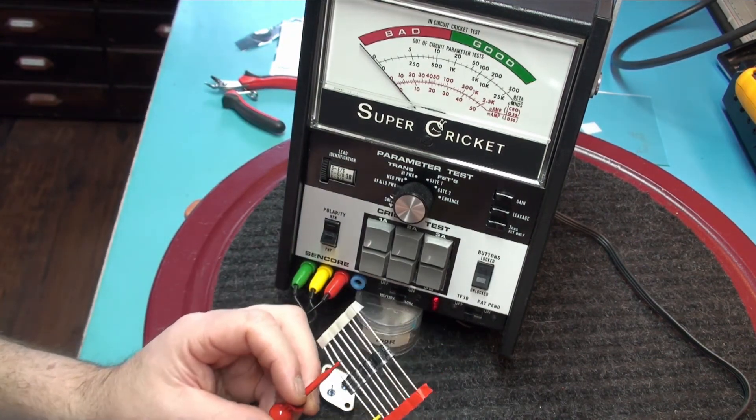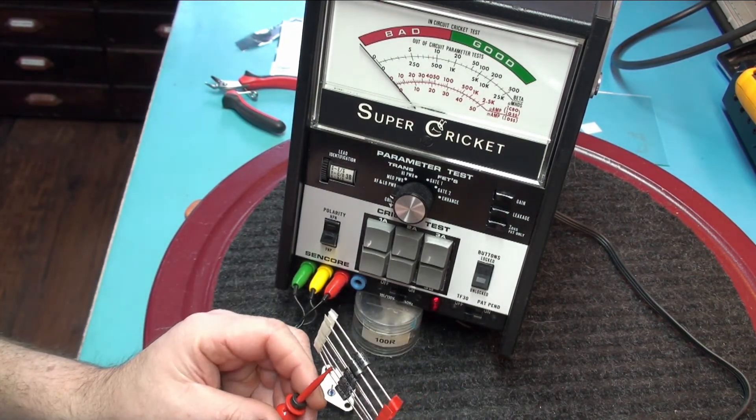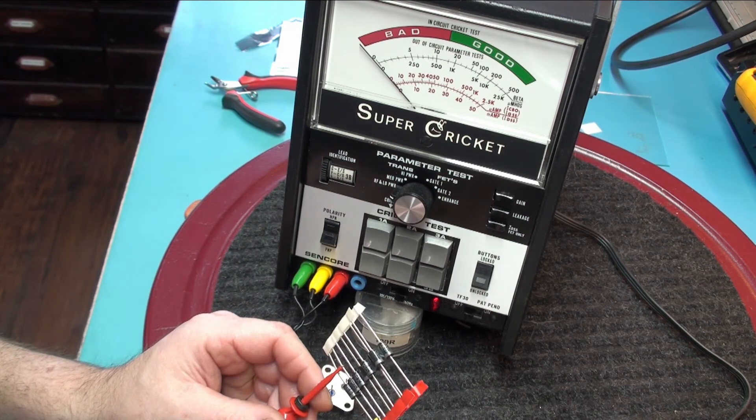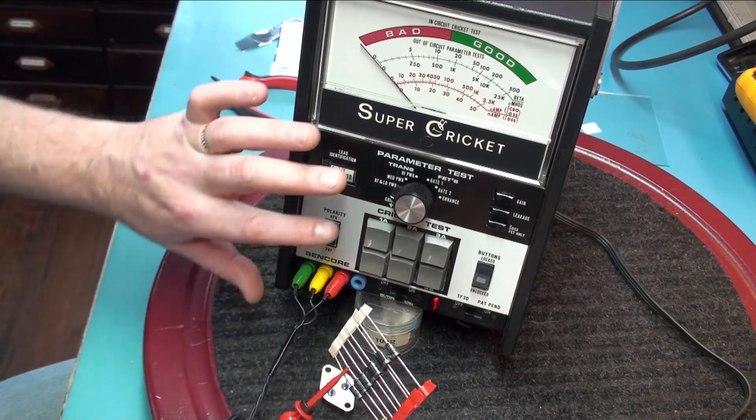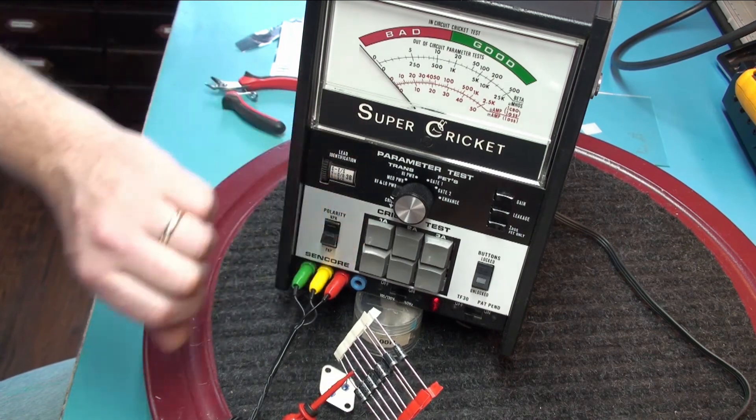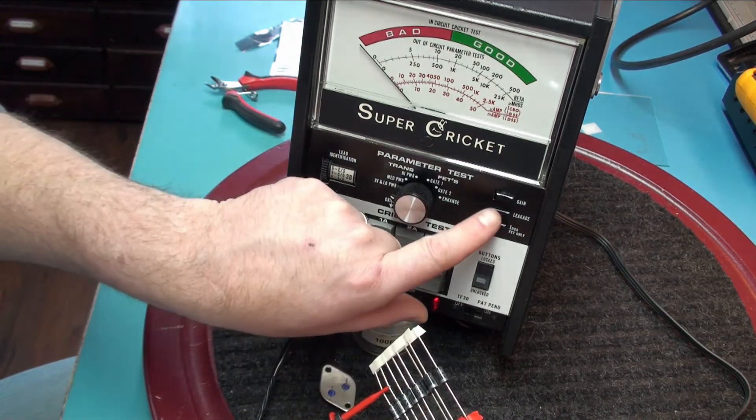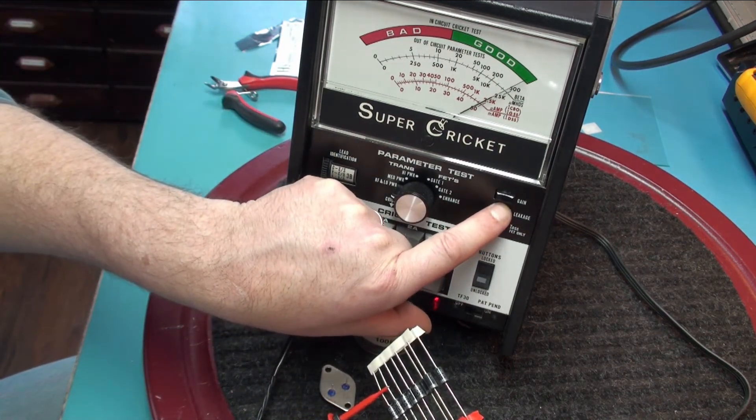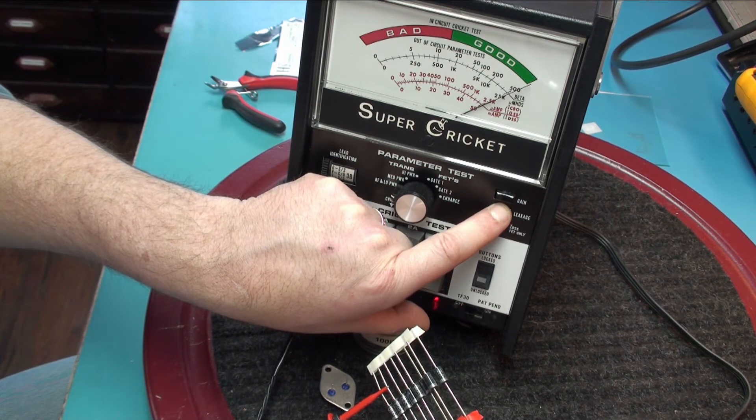We are going to connect the red lead to the anode and the yellow lead to the cathode. We are going to press down 1A and press leakage. And the device should show near full current.